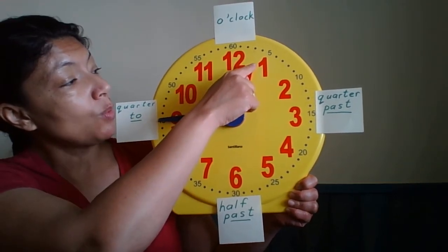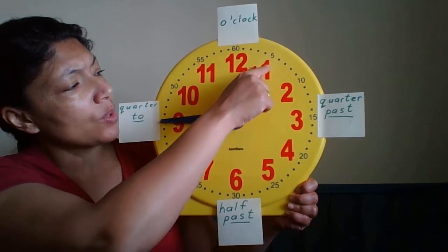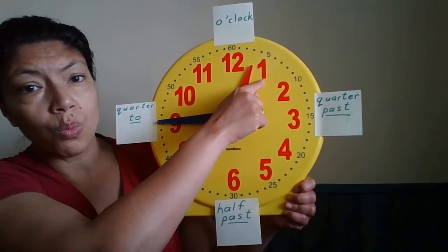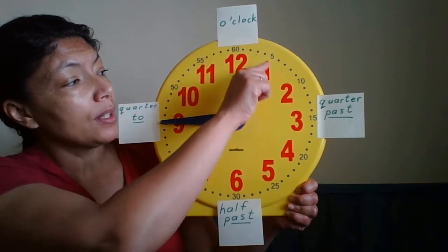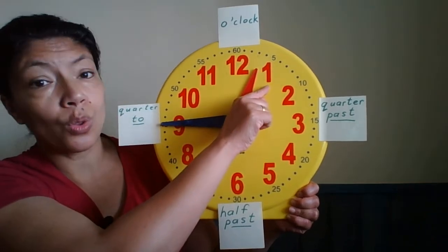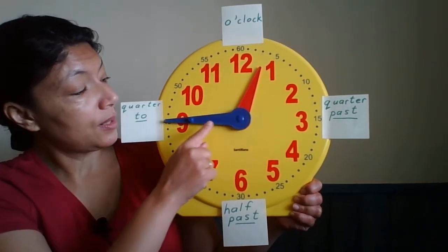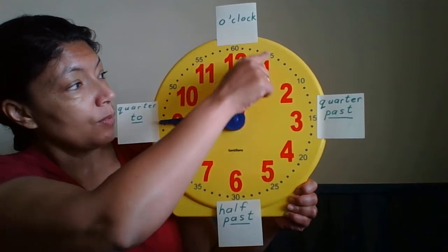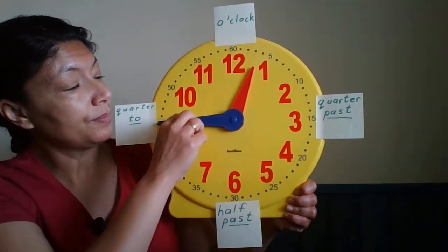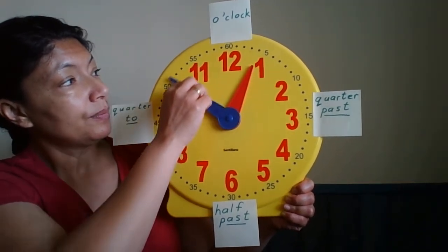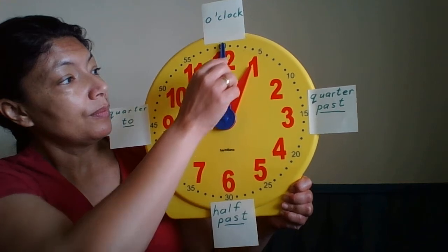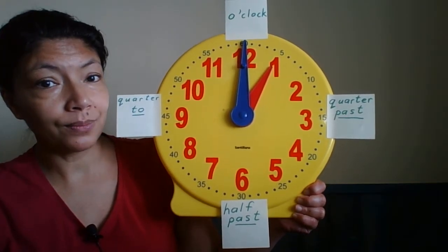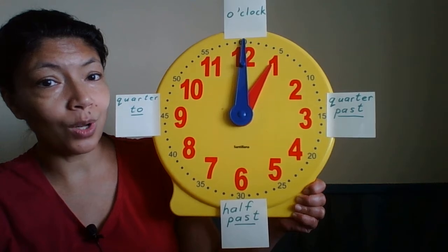It's quarter to one. The small hand is almost on the one — it's moving to the one. Quarter to one. It's one o'clock.